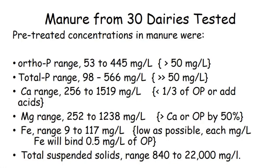Magnesium ranged from 252 to 238 mg/L, obviously of dietary origin with differences in feed or supplementation. Magnesium needs to be greater than calcium relative to ortho-P by about 50%. We do a lot of pre-tests on a given farm to know how much acid and magnesium to add. For iron, the range we saw was up to 917 mg/L — we want it as low as possible, as for each milligram per liter of iron it will bind about half a milligram of ortho-P.